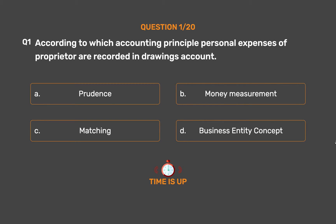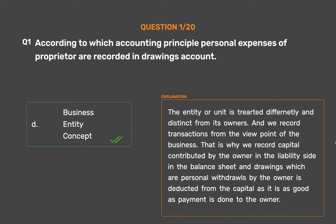The correct answer is Option D: Business Entity Concept. The entity or unit is treated as definitely separate and distinct from its owners, and we record transactions from the viewpoint of the business. That is why we record capital contributed by the owner on the liability side in the balance sheet, and drawings which are personal withdrawals by the owner are deducted from the capital.